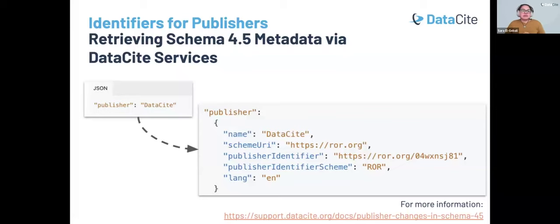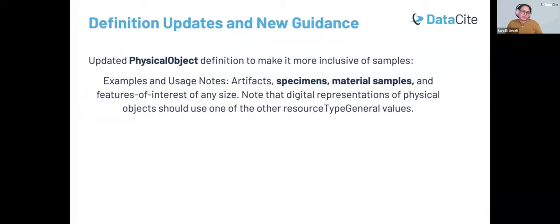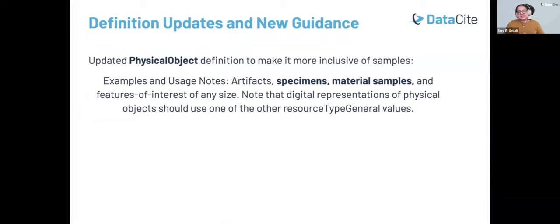With each schema version, apart from introducing new controlled vocabularies like we've seen or new relationship types, we've also made some updates to documentation to clarify certain definitions or provide more nuanced guidance. In schema 4.5, we've included updated definitions for physical object and resource type general. This improvement was to make it more inclusive for samples and reflect our support for sample registrations.